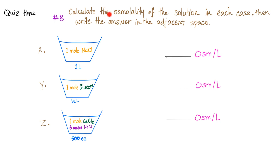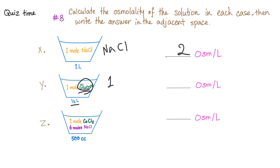Second question: calculate the osmolality of a solution in each case. Here we have one liter and one mole of sodium chloride. Is it ionizable? Yes — it gives you sodium and chloride. The answer is two osmols per liter. One mole of glucose in half a liter. Is glucose ionizable? No — it will give you one mole per half a liter, but per liter that is two.